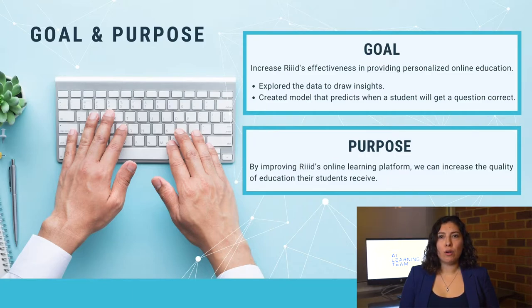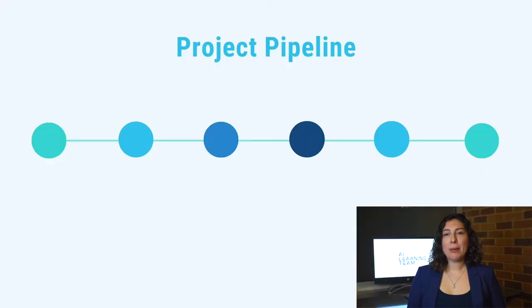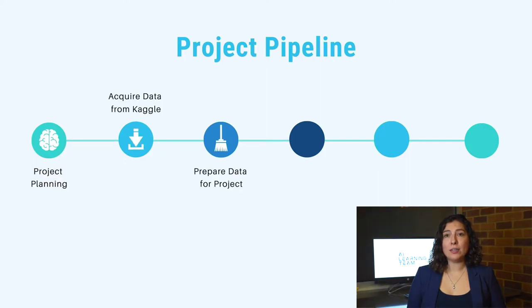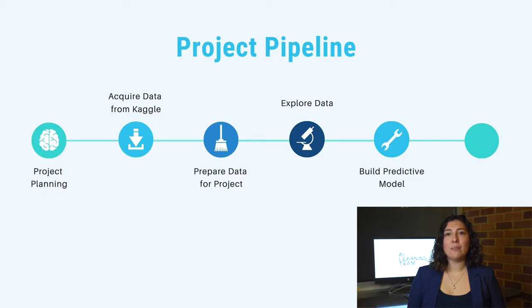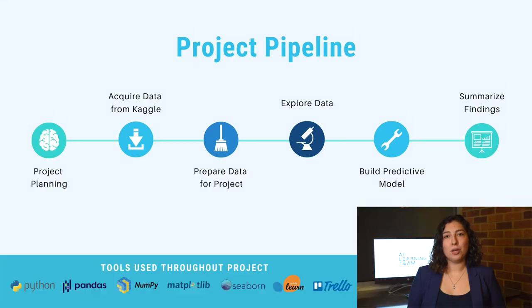Now let's look at an overview of our project pipeline. We began by planning out our project in Trello, a project management tool. Next, we acquired our data from the website Kaggle. Then, we prepared and cleaned the data using the Python libraries Pandas and NumPy. We explored the data using Matplotlib, Seaborn, and SciPy to find the drivers of student performance. Then, we used the Scikit-learn library to build a model that predicts what questions a student will answer correctly. Finally, we summarized our findings and came up with a set of recommendations for RID to improve their product.